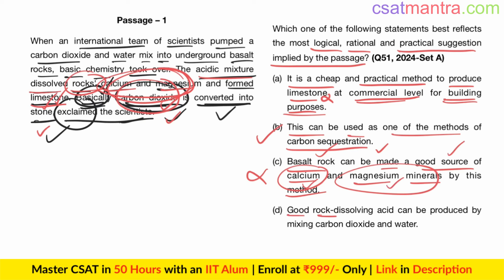Option D: 'Good rock-dissolving acid can be produced by mixing carbon dioxide and water.' The purpose of this experiment is not that, so our answer is B.